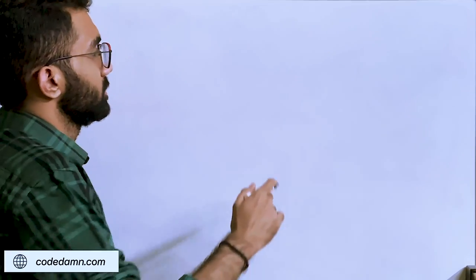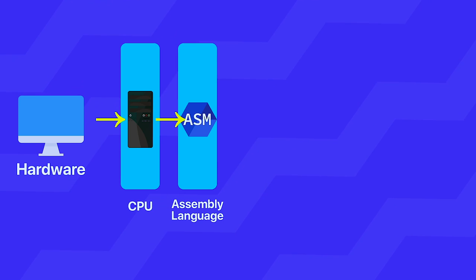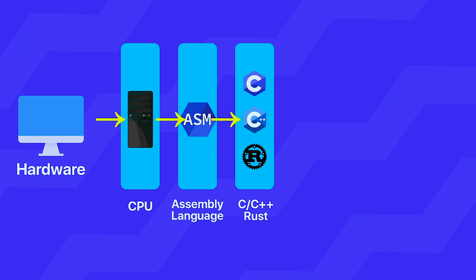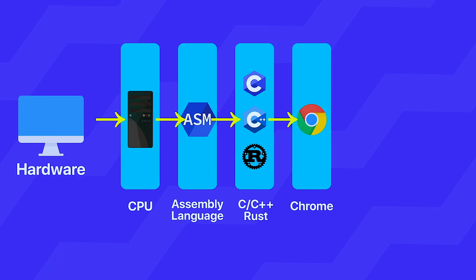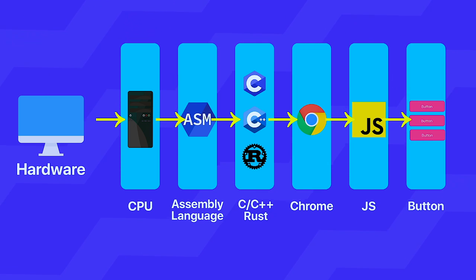Abstractions are everywhere in computers. You start with bare metal hardware, on top of which the CPU works with assembly language. Assembly can be compiled to something like C, C++, or Rust. That can be built into something like the Chrome browser, which gives you the ability to run JavaScript — and with JavaScript you can create a button or a cat image.